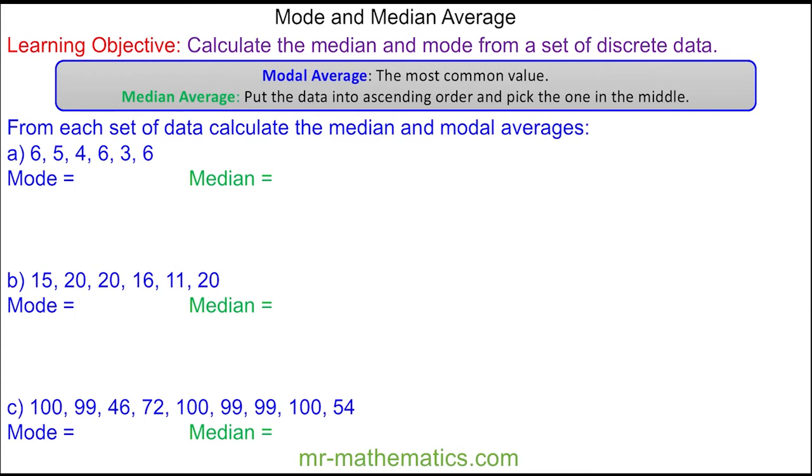Welcome to our lesson on the mode and the median average. The modal average is the value which appears most often or the most common value, and the median average is when we arrange the data into ascending order, which means from smallest to biggest, and we pick the one in the middle.